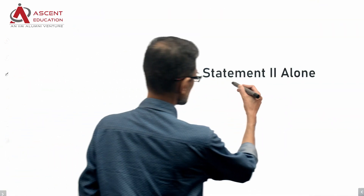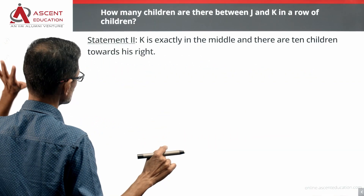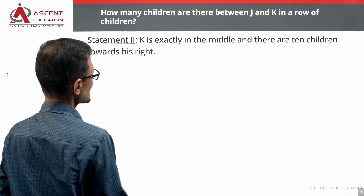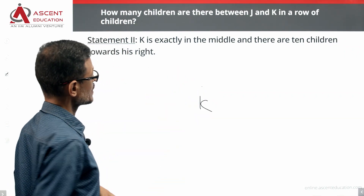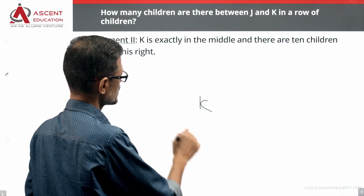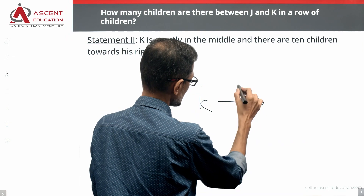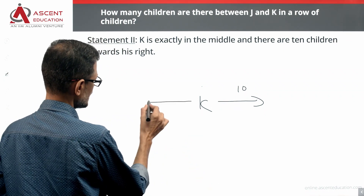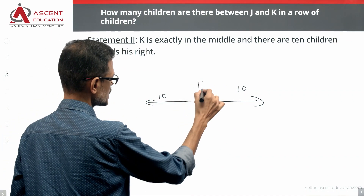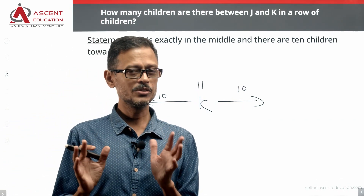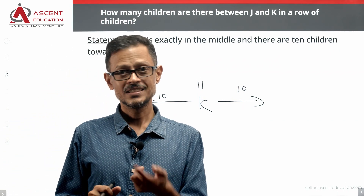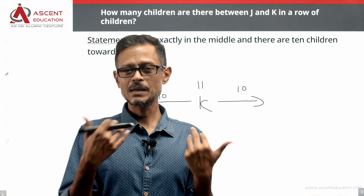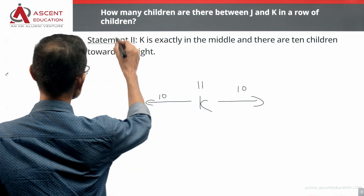Now let's look at statement two alone — we will not use statement one at all. Statement two says K is exactly in the middle of the row, and there are ten children to K's right. So K is in the middle, with 10 children to the right and 10 to the left, placing K in the 11th position from the left. But statement two gives no information about J's position, so statement two alone is not sufficient either.